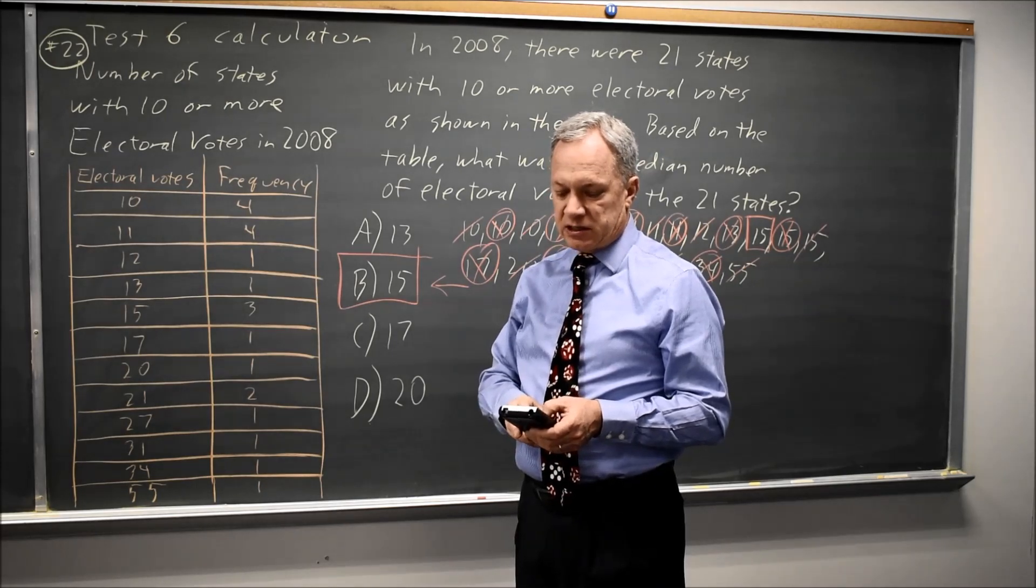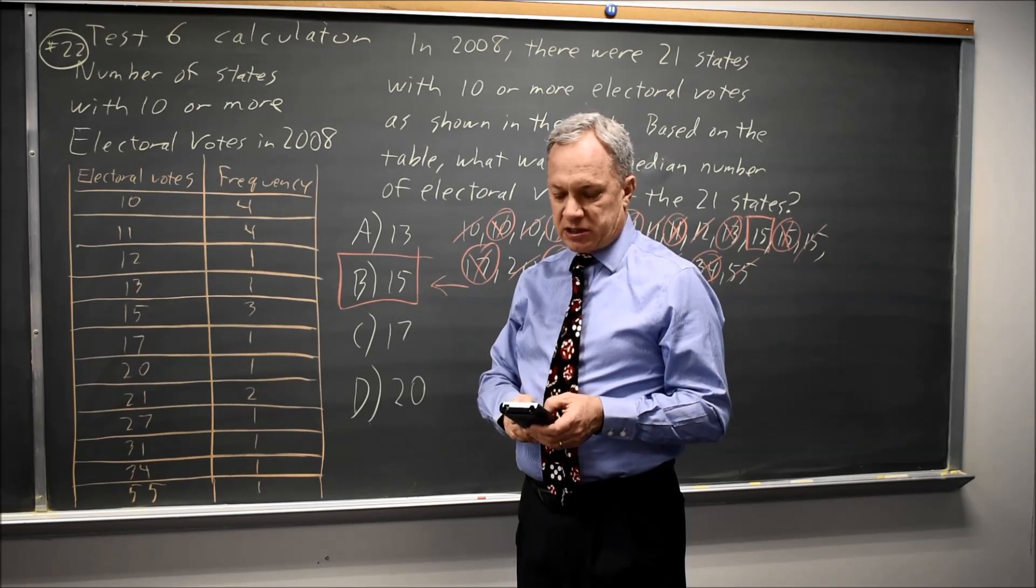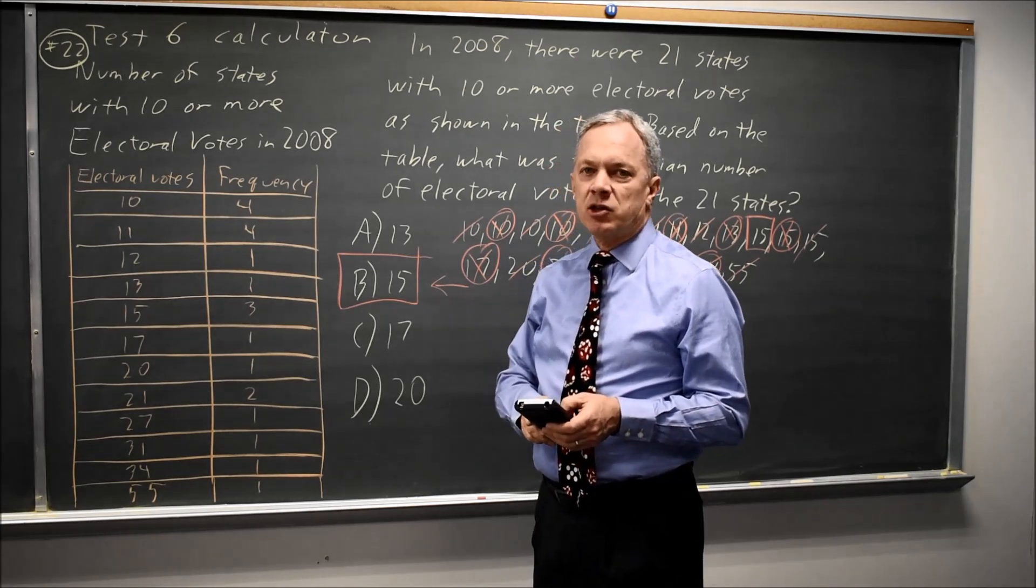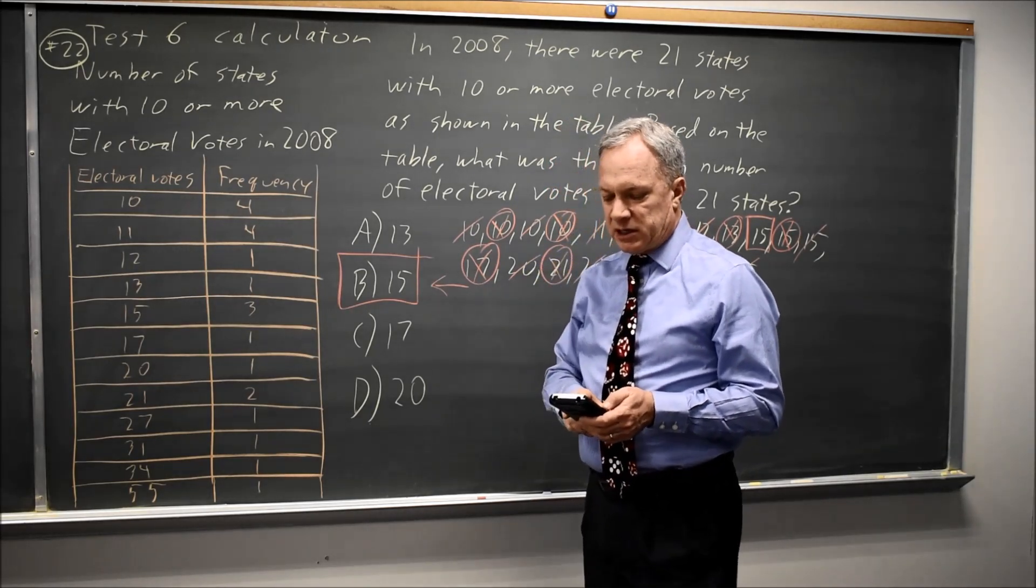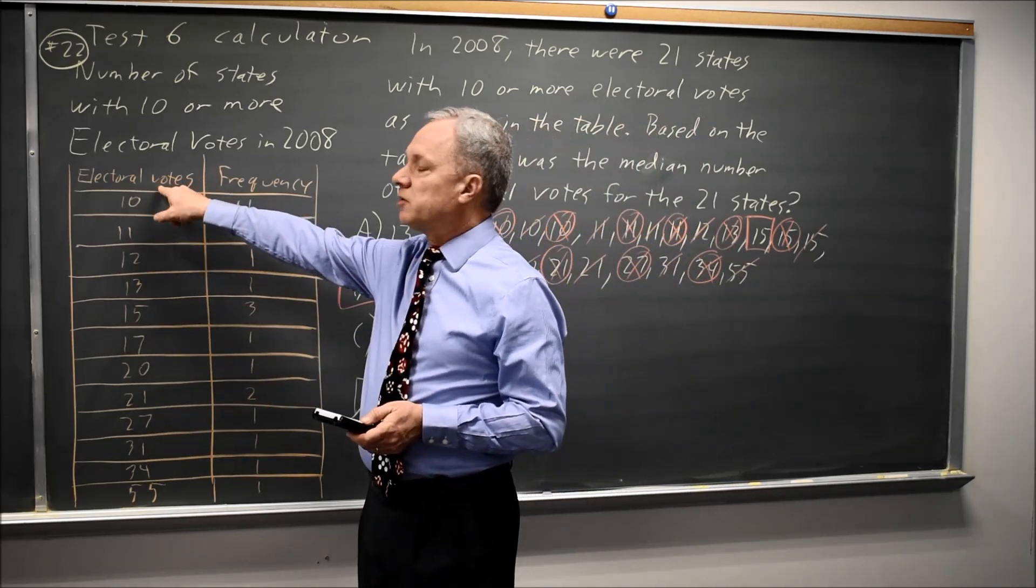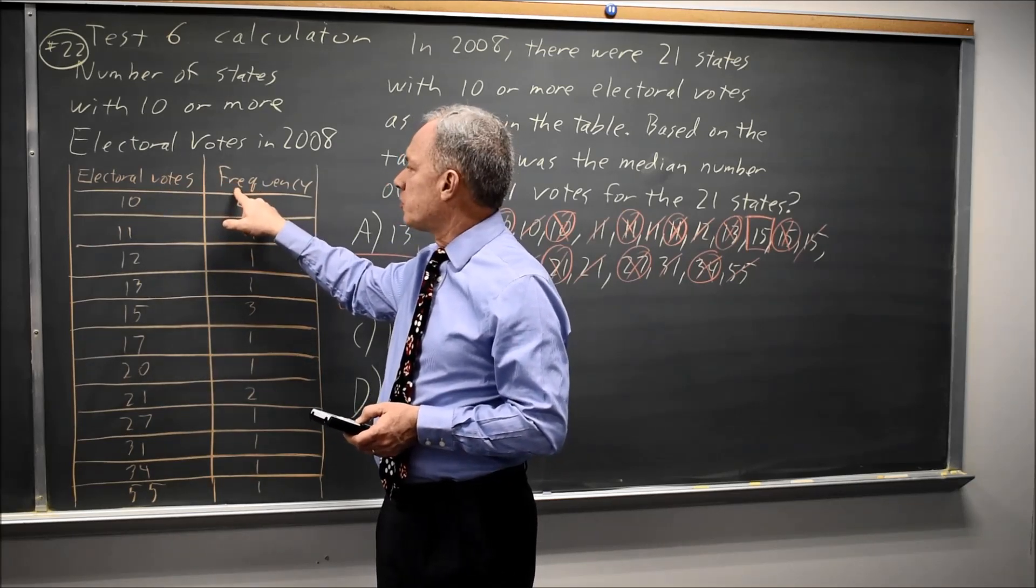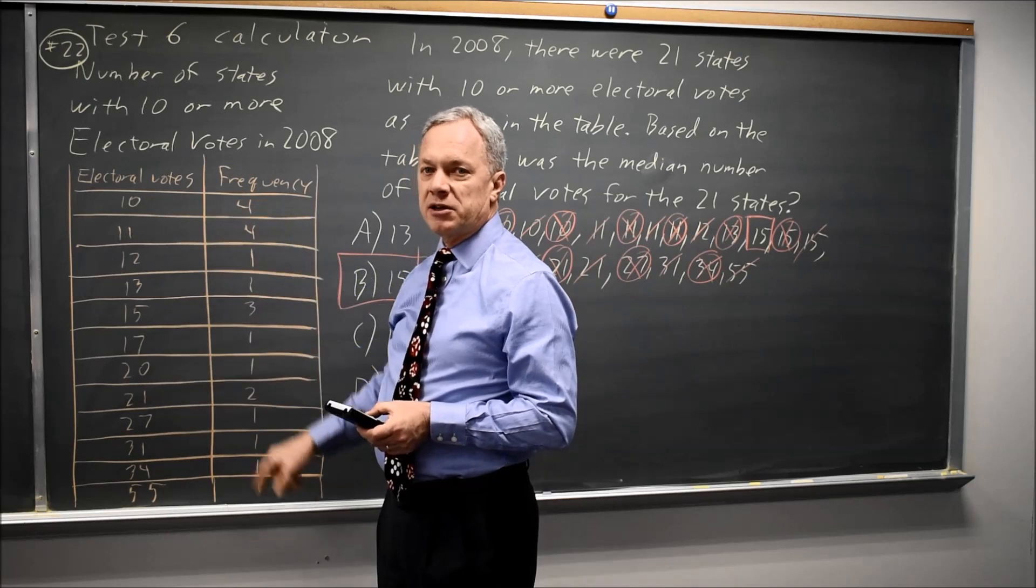And then if you go right to stat, calculate, you can ask for one variable statistics, and the newer operating system asks for list and frequency list. So second one would give you L1, where I put electoral votes. Second two gives you L2, where I put my frequency list. And then it will calculate.